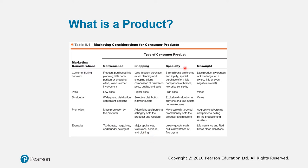Specialty products have strong brand preferences and loyalty, requiring special purchase effort. You normally go through the five steps in the consumer decision-making process. The price is typically very high, and they have exclusive distribution — typically sold in boutiques. Promotion is carefully targeted to target markets. Examples include luxury goods such as Rolex watches or fine crystal like Pandora. Consumers will not accept substitute brands because they already have strong preferences and loyalty.